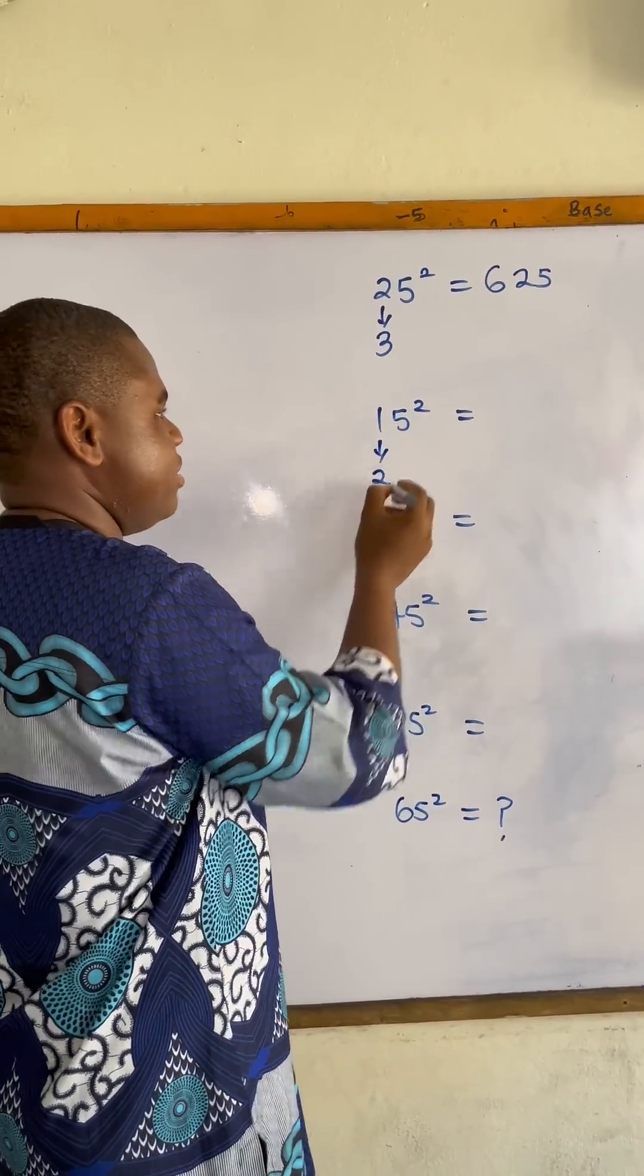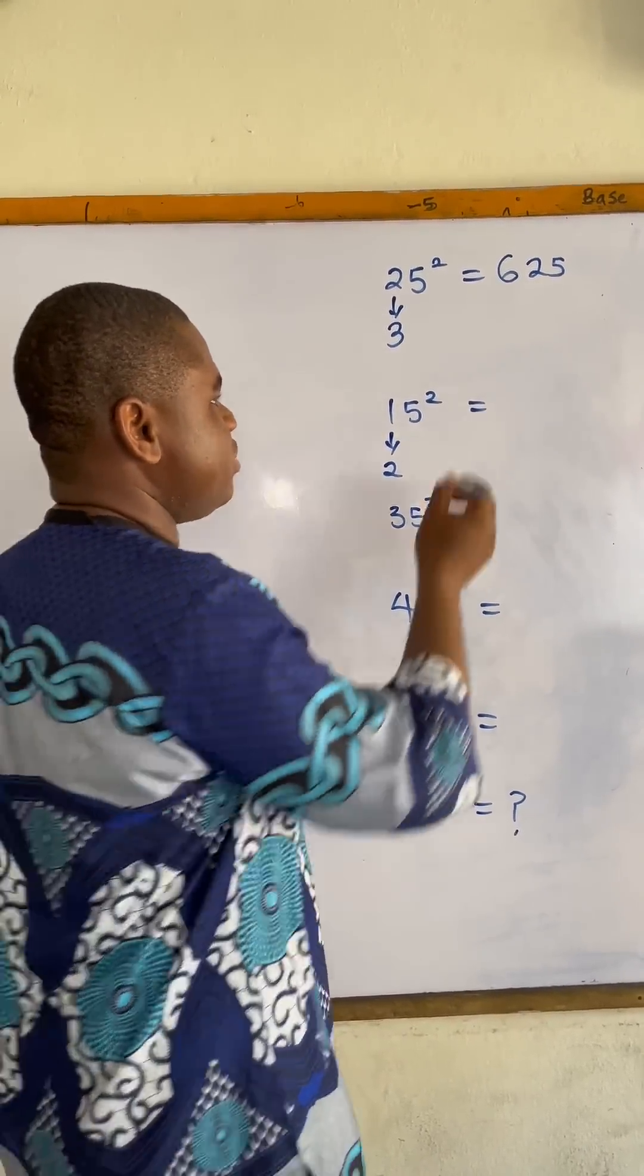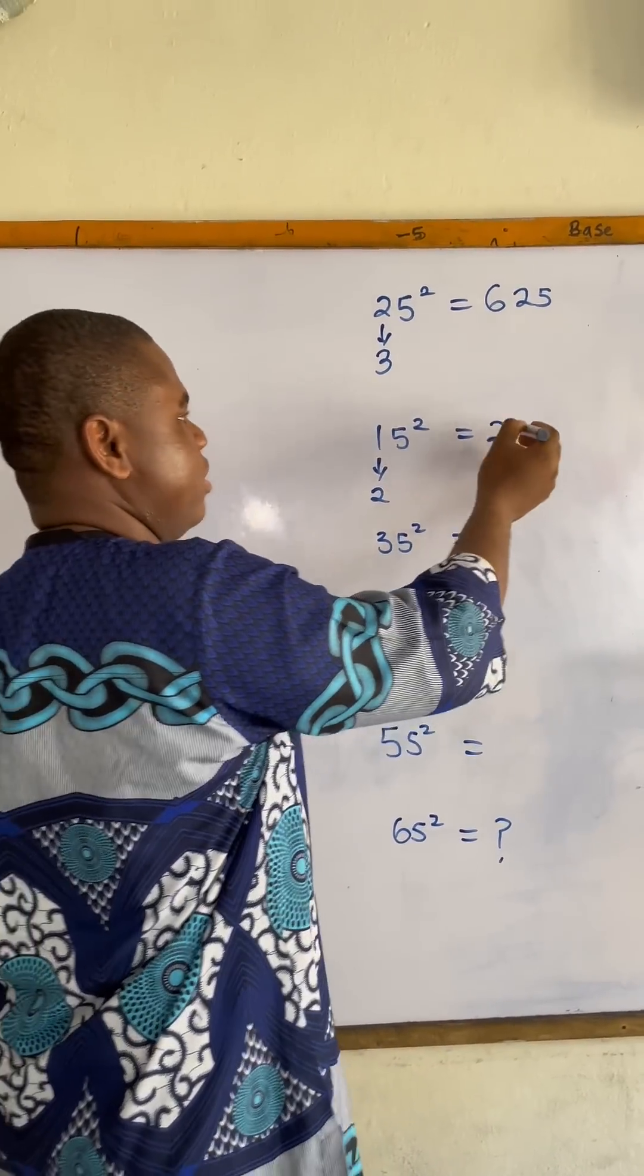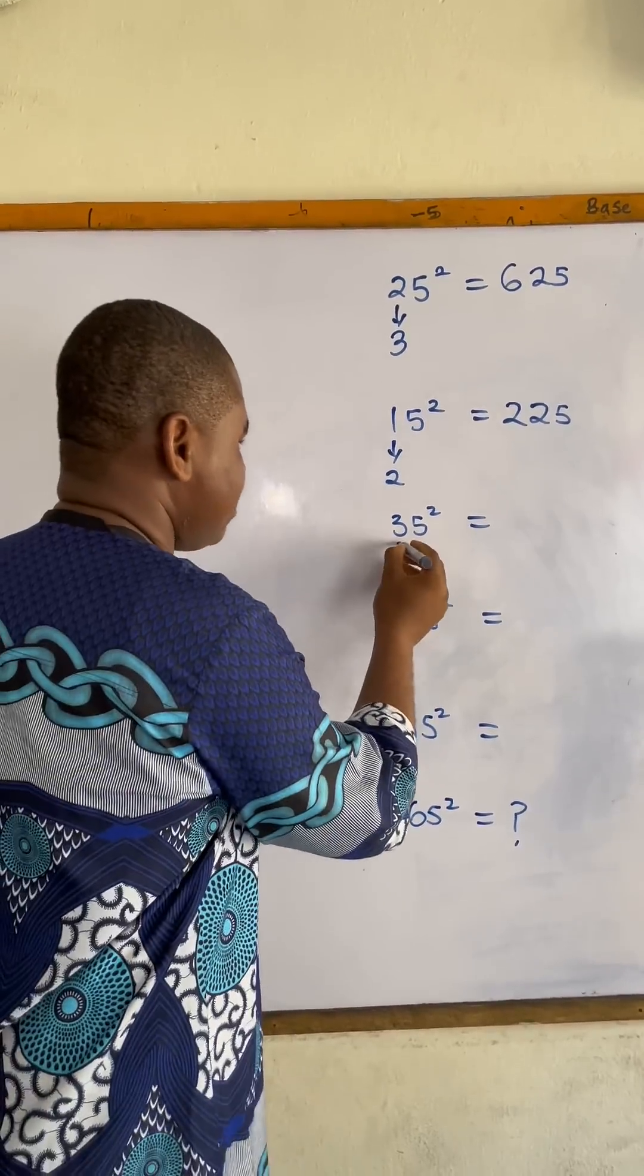The same thing here. The next number after one is two, so two times one is two, five squared is 25. So 15 squared equals 225.